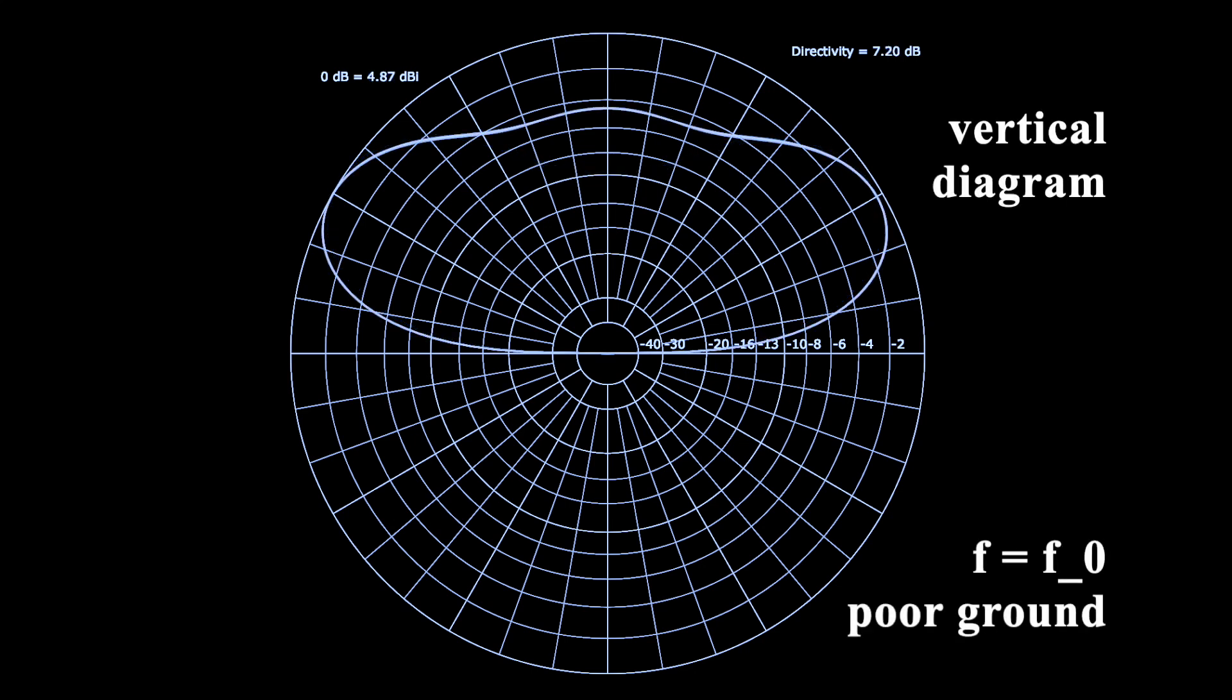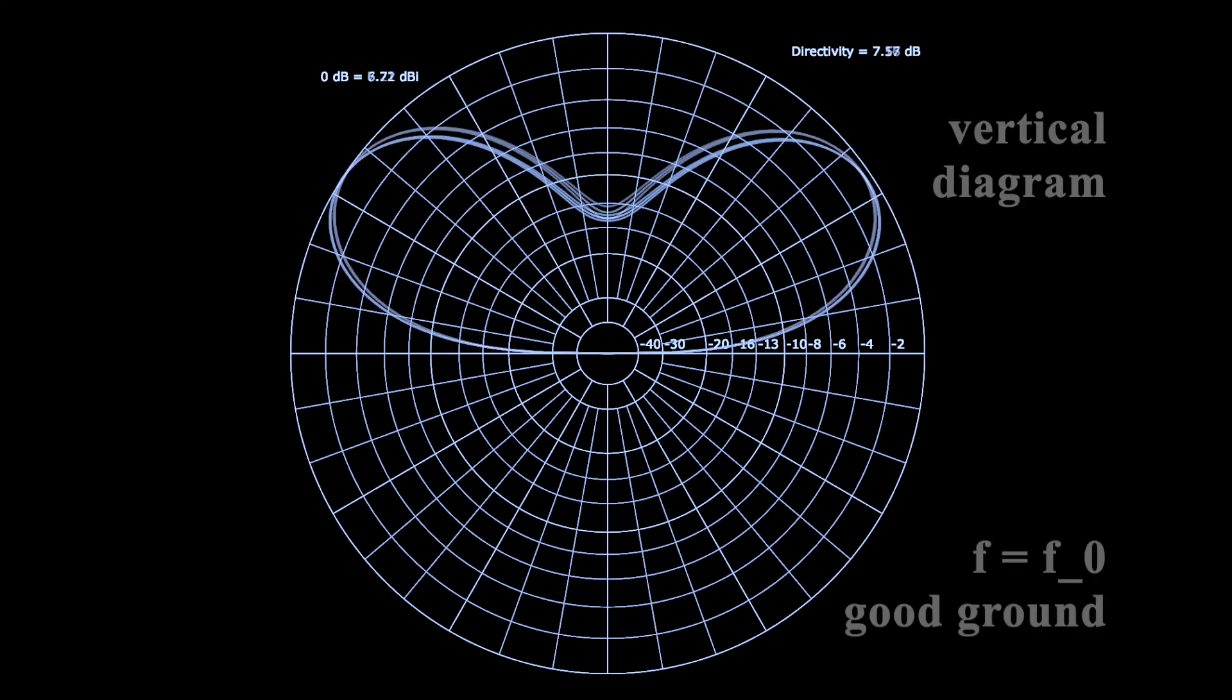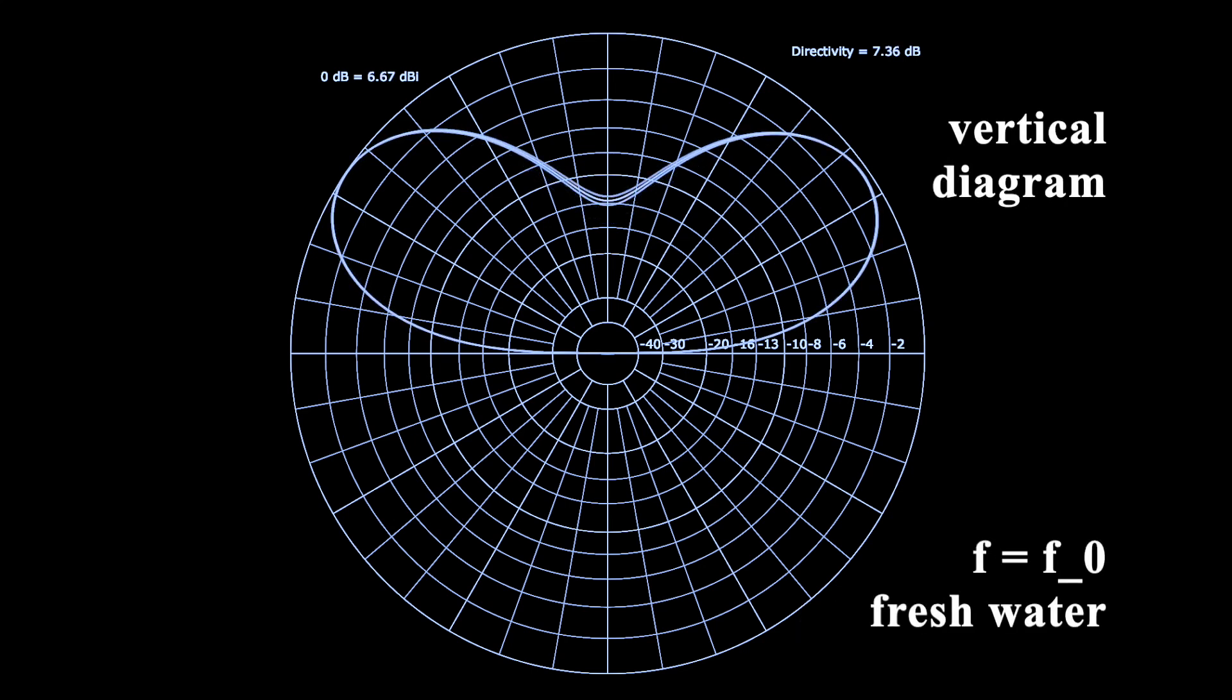Over poor ground a little more energy is radiated perpendicular to the sky. Over good ground, perfect ground, salt water and fresh water it is a little less.